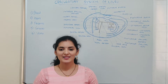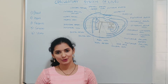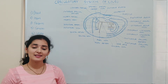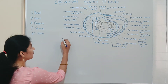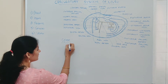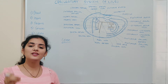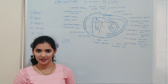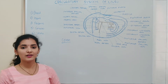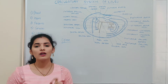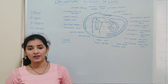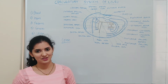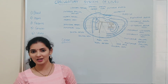Today we will learn about the blood vascular system of Unio, or the circulatory system of Unio. The circulatory system in the case of Unio is open type. Open type means the blood flows through the sinuses or the cavity present in the body, because this individual lacks capillaries or minute blood vessels.